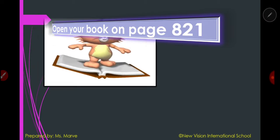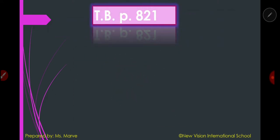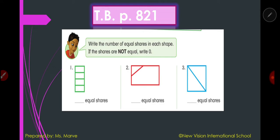Open your book on page 821. Write the number of equal shares in each shape, and if the shares are not equal, write zero. Number one: count — one, two, three, four — so write four. There are four equal shares. Number two: the other sides are smaller than the other, so this one is zero equal shares. Number three: one, two — we have two equal shares. Let's check your answer.